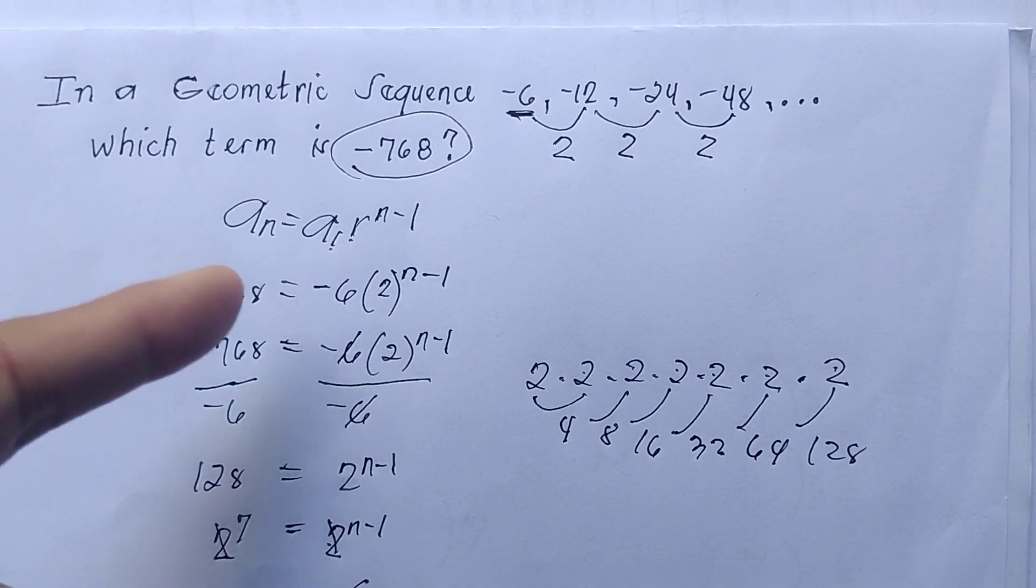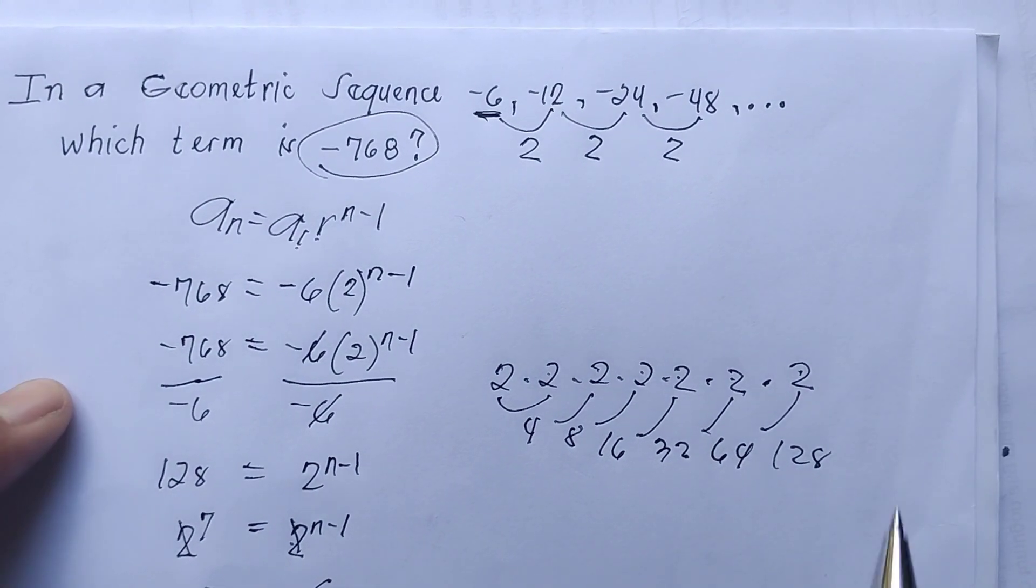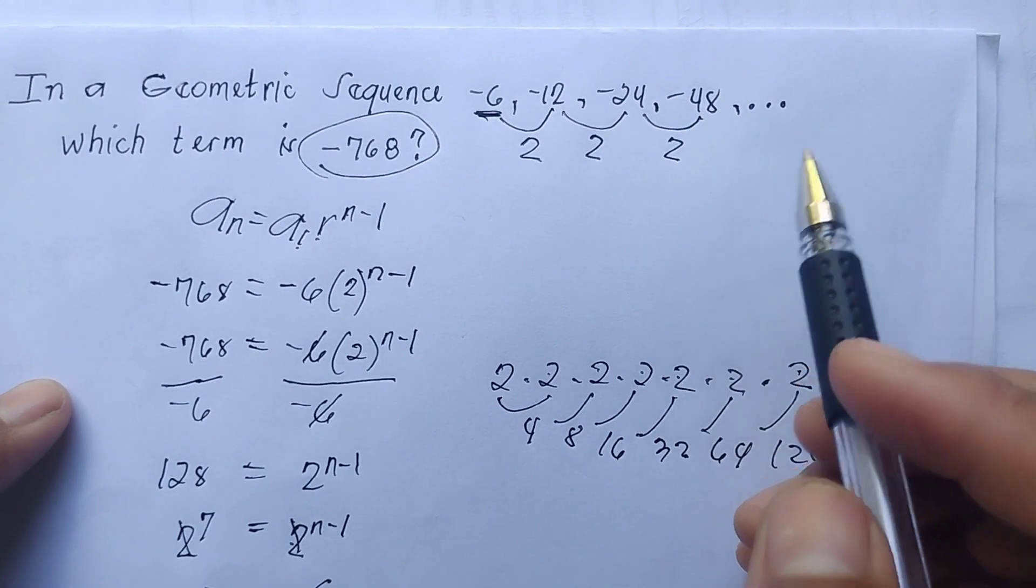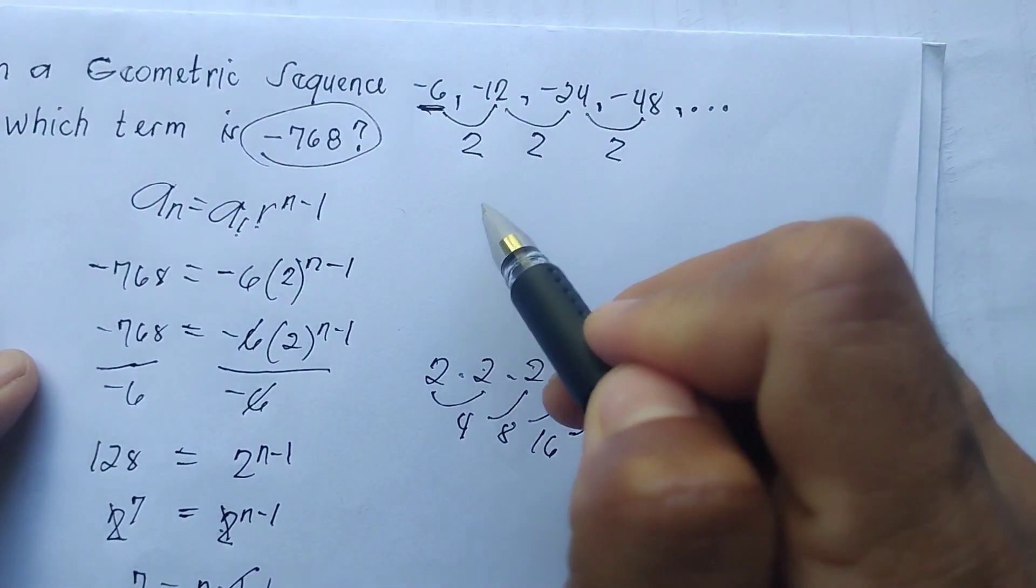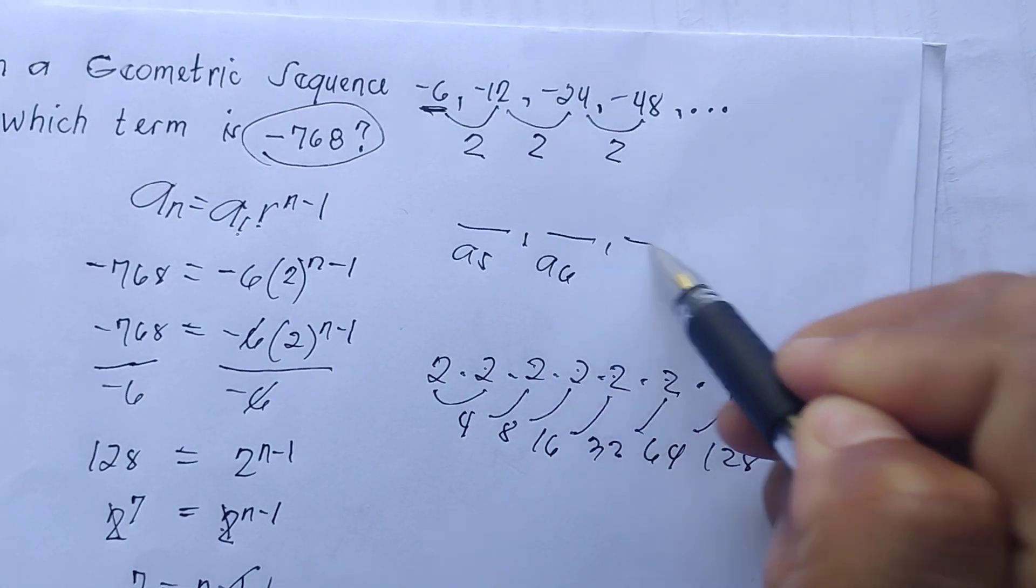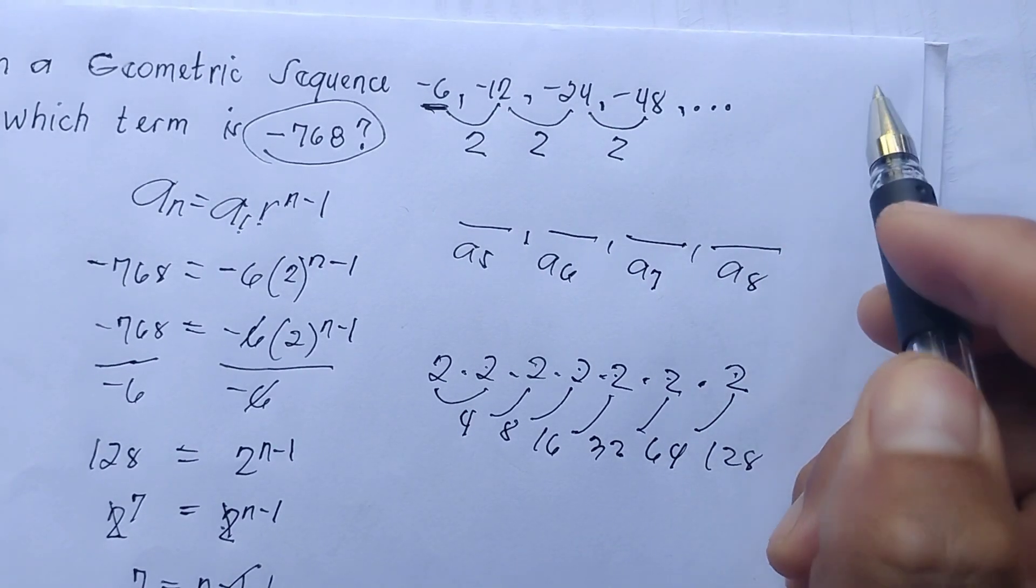To get -768, we will check that if we got the correct answer. Here we already have 4 sequence or terms. We need to continue that. We have here the fifth term, and then the sixth term, and then the seventh term, and then the eighth term.